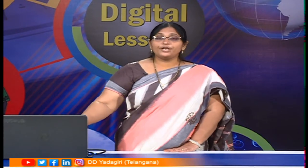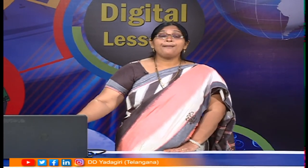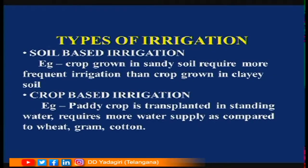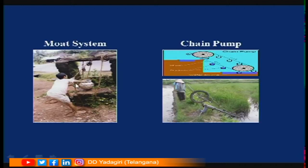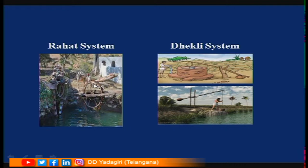In ancient days, different methods were used for irrigation using animals and plants. Ancient methods, also called traditional methods, include: mot (pulley system), chain pump, dhekli, and rahat. In the chain pump system, a pulley is arranged and drawn with a rope.